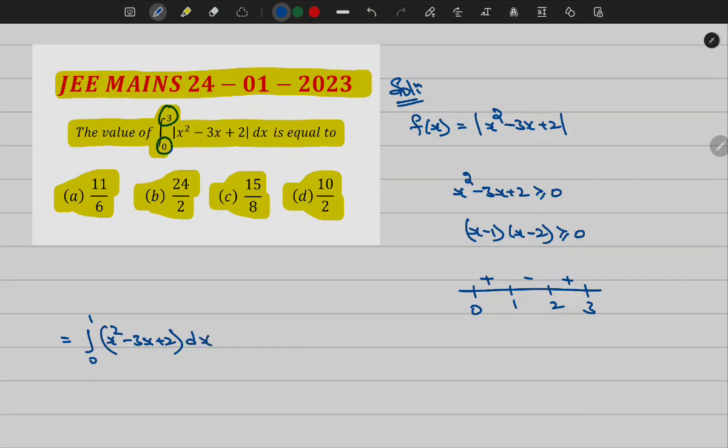And from 1 to 2 it is negative, minus integral 1 to 2 of x square minus 3x plus 2 dx. And from 2 to 3 it is positive, plus integral 2 to 3 of x square minus 3x plus 2 dx.